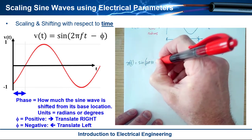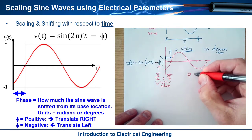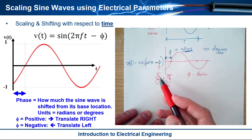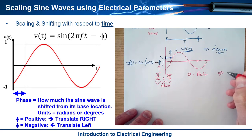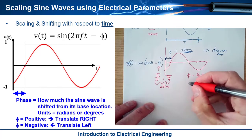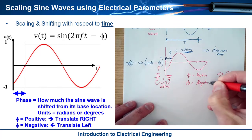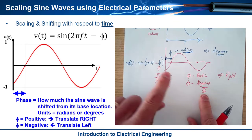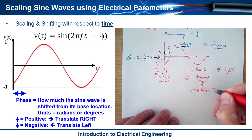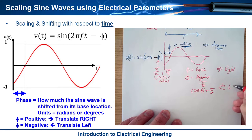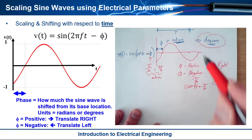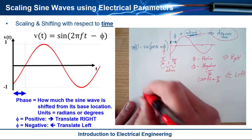The form of this equation has a negative sign. If the phase shift phi is positive — say, π/2 — then you have 2πft minus a value, and that translates the sine wave to the right. If the phase shift is negative, like negative π/2, then you end up with a positive addition in the argument, like 2πft + π/2, which results in a translation to the left.